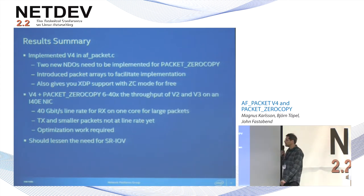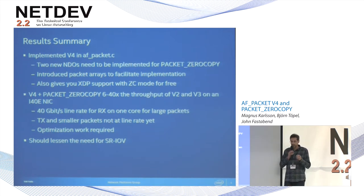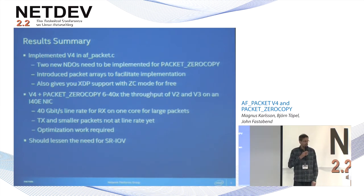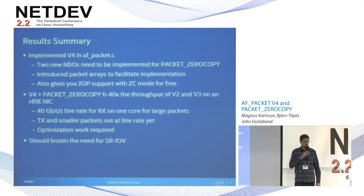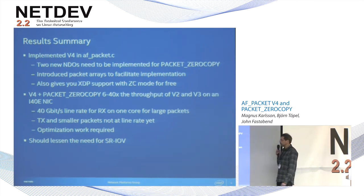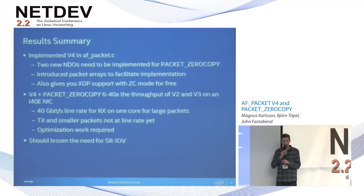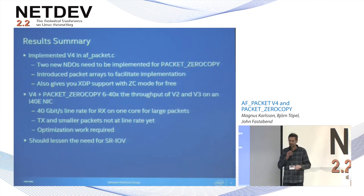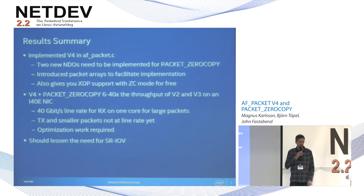Our goal is to hit 40 gigabits per second — line rate for a 40 gigabit card — on a single core for large packets, and about 30 gigabits per second for small 64-byte packets. Most of the implementation is in the new V4 socket layer, with some code in the Linux NIC driver. There are no changes to the general path of the INET datagram sockets — it's only for the AF_PACKET path. We also integrated it with XDP so that if you implement zero-copy support, you get XDP support essentially for free.